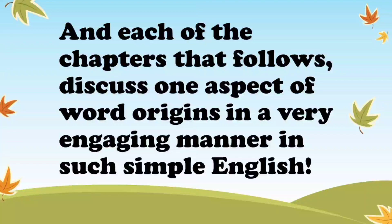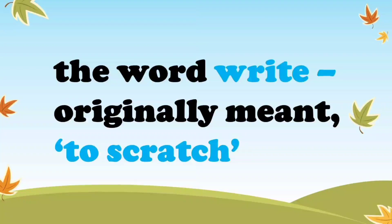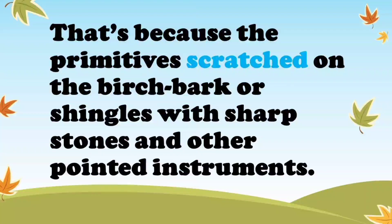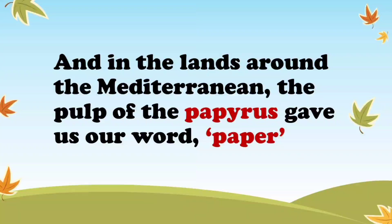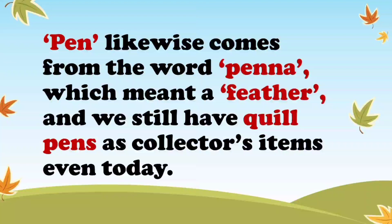In each of the chapters that follows, one aspect of word origins is discussed in a very engaging manner, in such simple and beautiful English, in this book by Wilfred Funk. In the second chapter, we have word origins connected with speaking and writing. For example, the word write originally meant to scratch — that's because the primitives scratched on the birch bark or shingles with sharp stones and other pointed instruments. It's also quite interesting to know that the word pen comes from the word penna, which means a feather, and we still have quill pens as collector's items even today, says Wilfred Funk.